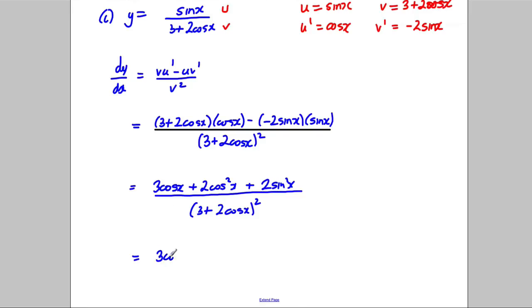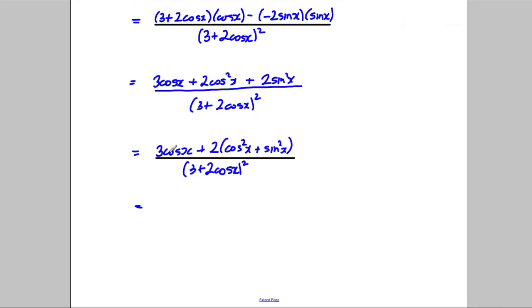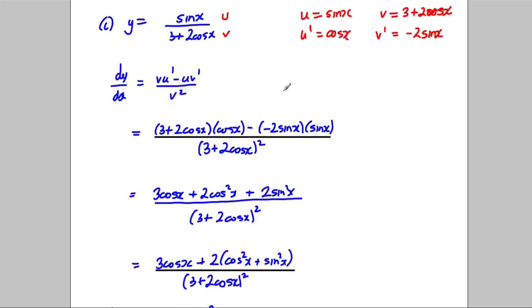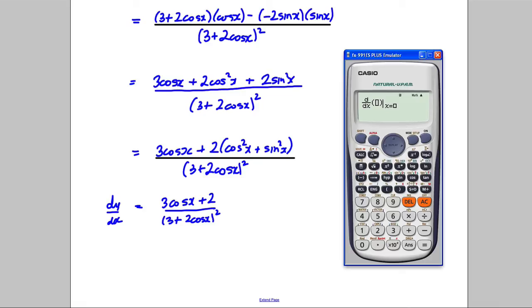We should recognise that cos²(x) + sin²(x) = 1, so 2cos²(x) + 2sin²(x) = 2. Therefore the numerator simplifies to 3cos(x) + 2, giving us dy/dx = (3cos(x) + 2) / (3 + 2cos(x))². In the exam, I would take the calculator out, differentiate the original function, substitute a value in, and check it matches your answer.